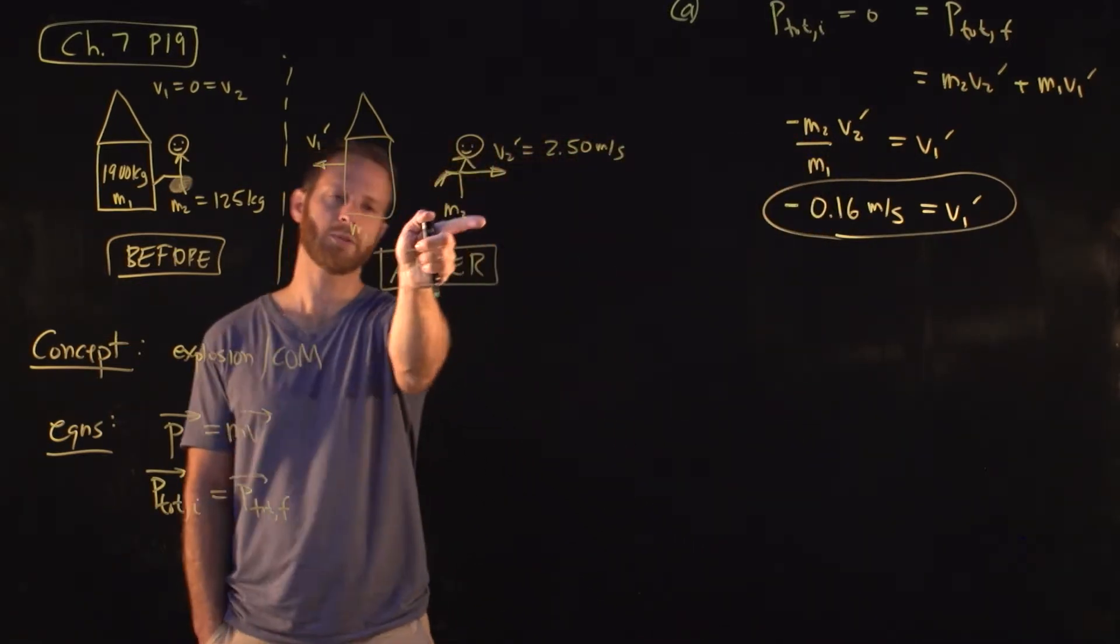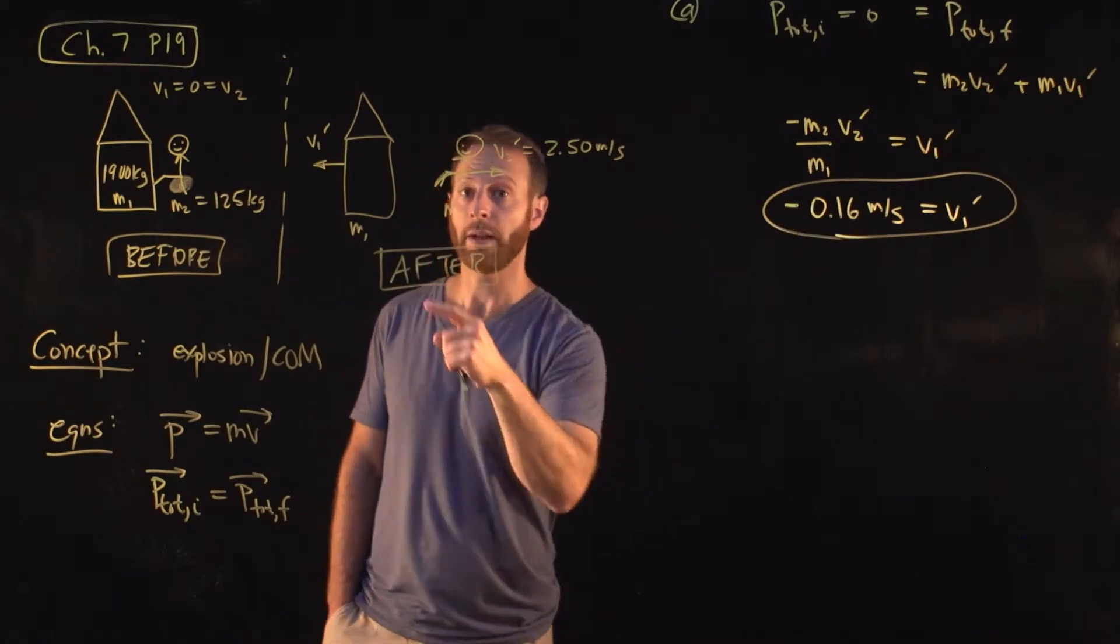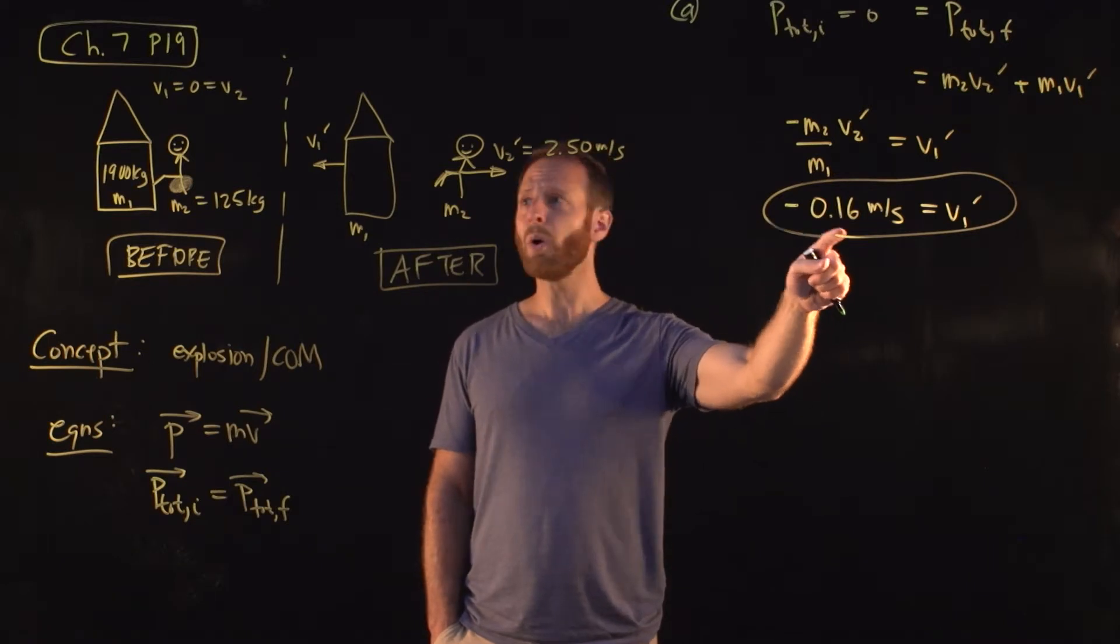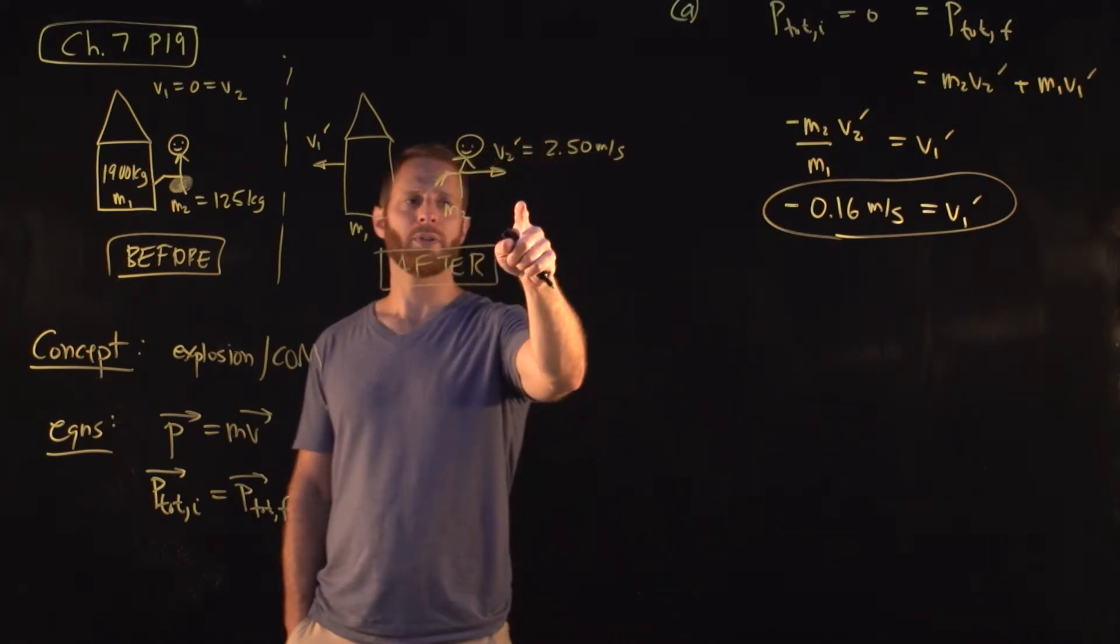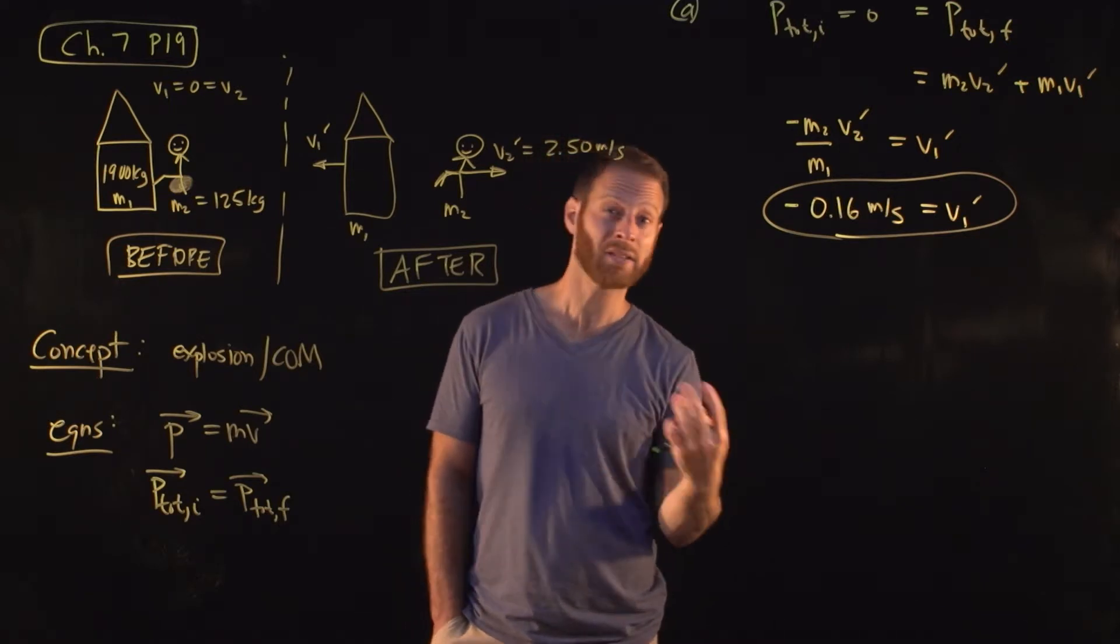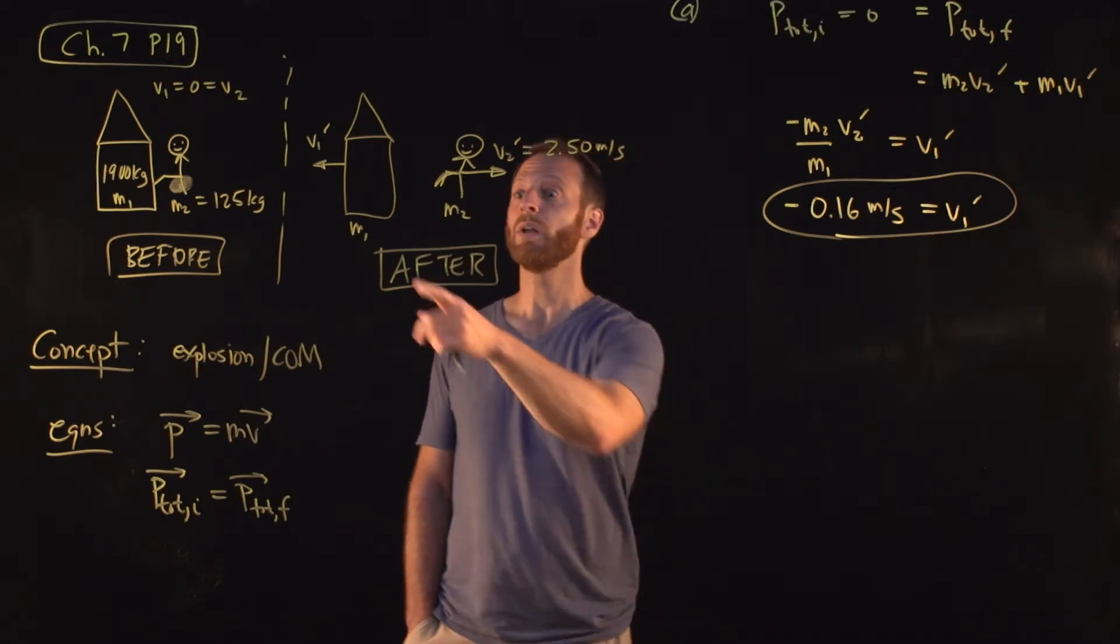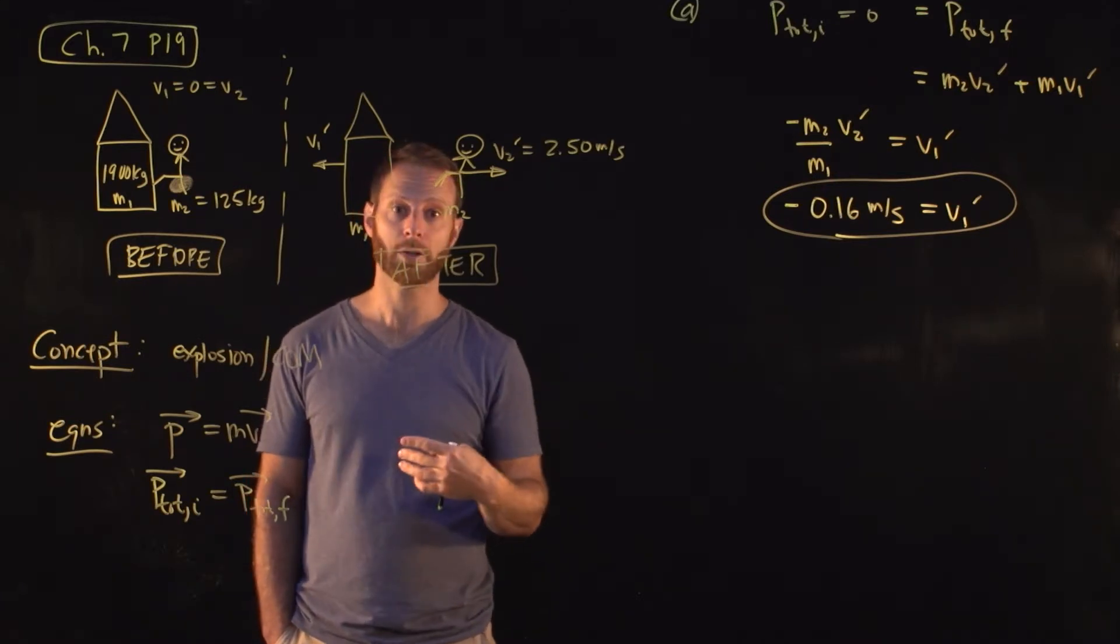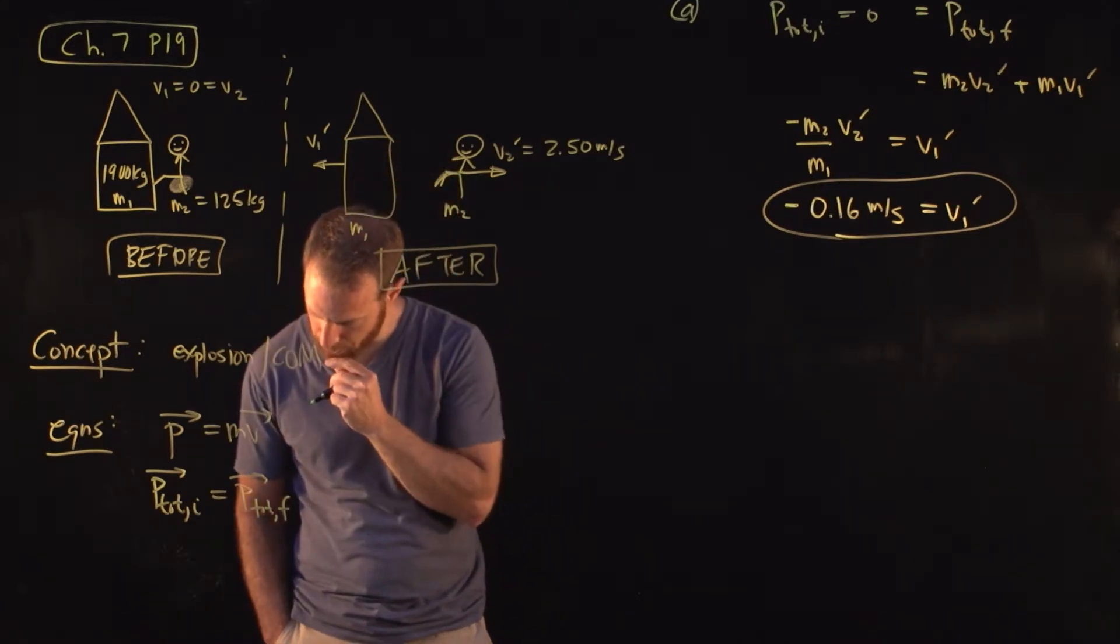Well, if we've defined velocities to be positive in that direction, then anything going that way should have a negative velocity. So that's consistent. It's moving much slower than the person, which is moving more than 10 times faster. Is that what we expect? Based on our own experience, I would say so. The object, the spaceship, is much more massive, so it should have much smaller speed. That seems legitimate.